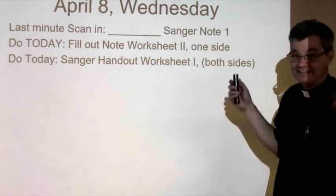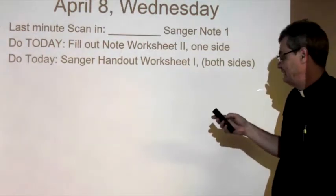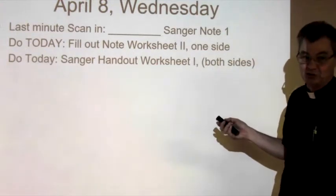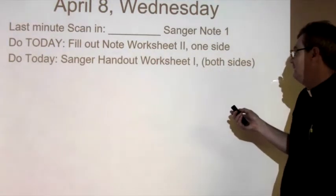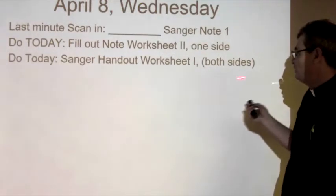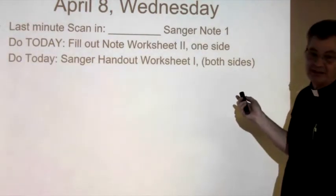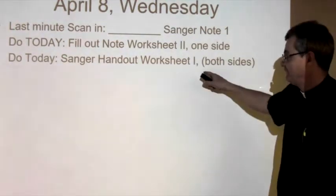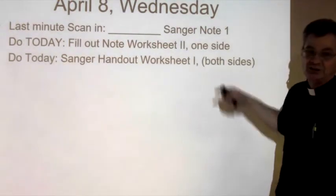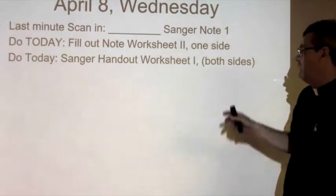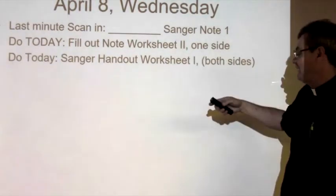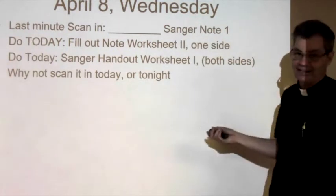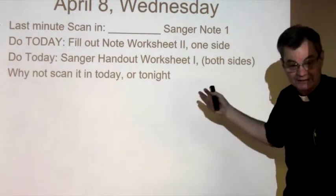Do today — that's today on Wednesday — then do the Sanger handout, which will be on PowerSchool unless you have your packet. Both sides is what you're working on. I tried to make it so that every day there were three sides. I shortened this handout so it would be easy all the way around. Why not scan it in today or this evening, presuming today is Wednesday?